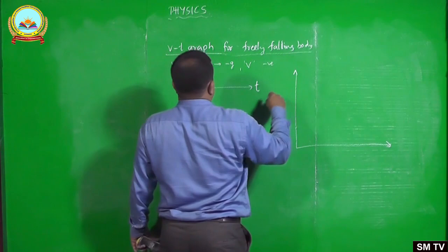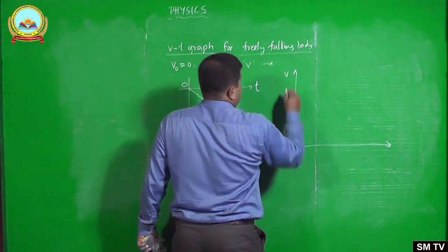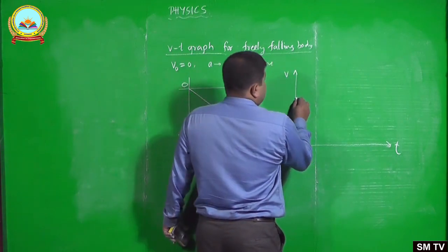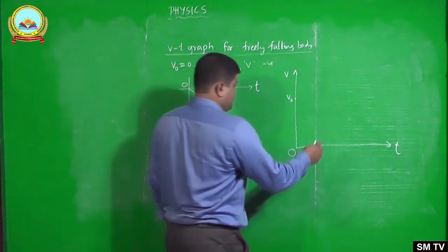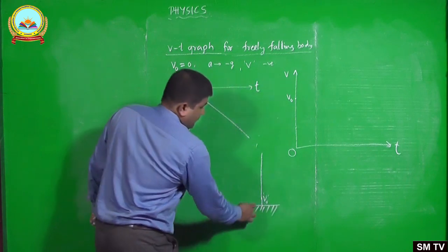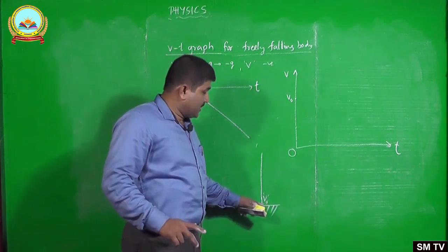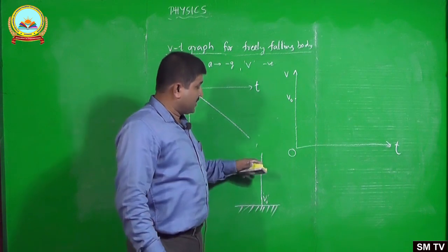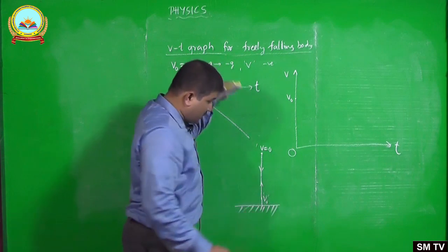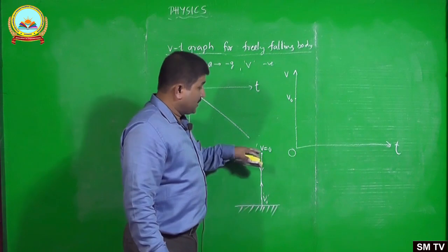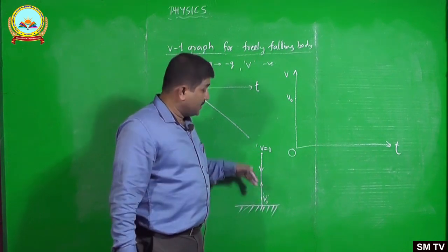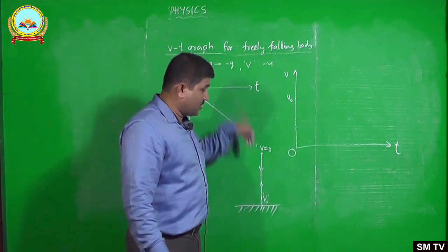Another situation: when the object is thrown vertically upward. Its velocity is maximum at the moment of projection. As it goes upward, velocity continuously decreases. V₀ is the maximum value when thrown from the ground. At the highest point, velocity becomes zero. Then as it falls downward, the magnitude of velocity increases, but direction is downward so velocity is taken as negative. The VT graph starts at V₀, decreases linearly to zero at the highest point, then continues downward into negative values.